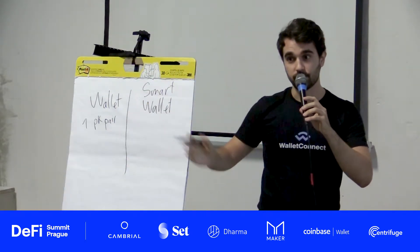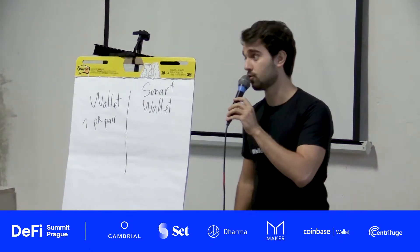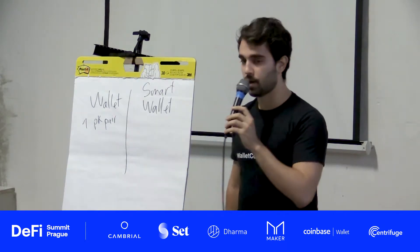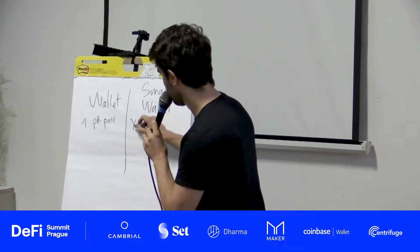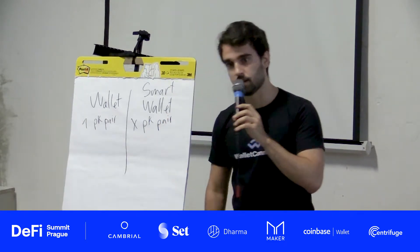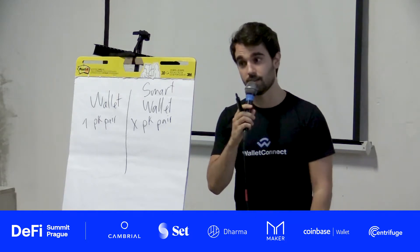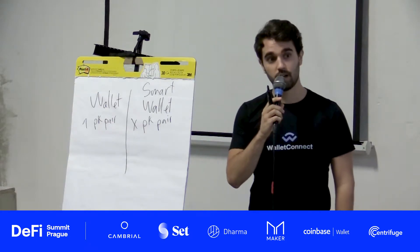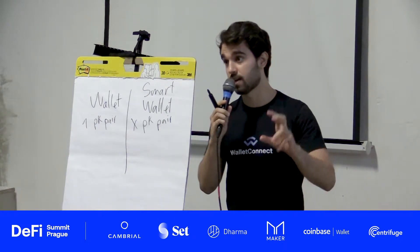There's only one copy of the public and private key pair — that's the seed phrase problem, where you have to write down 12 to 24 words to recover your key that generates this pair. With a smart wallet, we're able to have X public-private key pairs. This is not what hierarchical deterministic wallets or HD wallets are — that's just how wallets exist right now. When you have a seed phrase, you're generating multiple keys, and we end up using the first one generated as your main account.